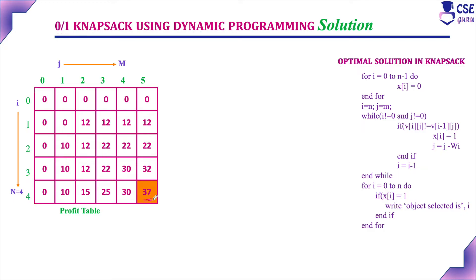To find out the objects, here is the algorithm. For i equal to 0 to n minus 1, we apply x of i equal to 0. This is the initial step. Before that, what are the things given? The number of objects is 4, and the initial maximum capacity of the knapsack is 5.